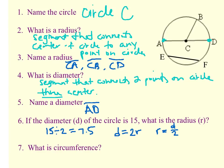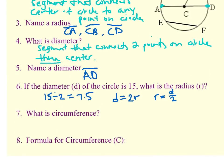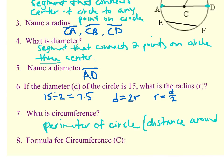Number seven: what is circumference? Circumference is the distance around a circle. So for example, if I start at A and travel all the way around the circle and get back to A, that distance is considered the circumference. We probably know that as perimeter, but when it's a circle we don't use the word perimeter — we use circumference. So circumference is the perimeter of a circle; it is the distance around the circle.